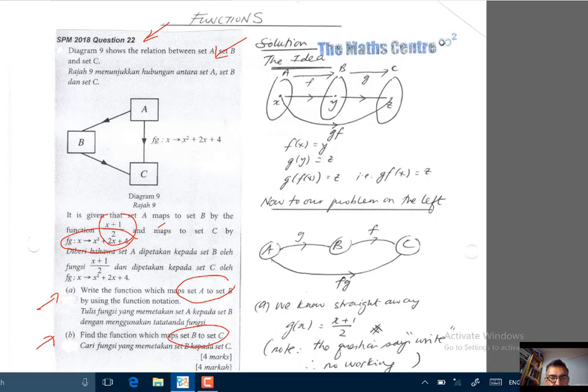Kita dikendaki menulis fungsi yang memetakan set A kepada set B dengan menggunakan tata tanda fungsi. Dan di bahagian B pula, kita kena cari fungsi yang memetakan set B kepada set C.